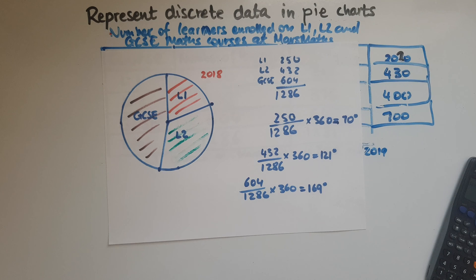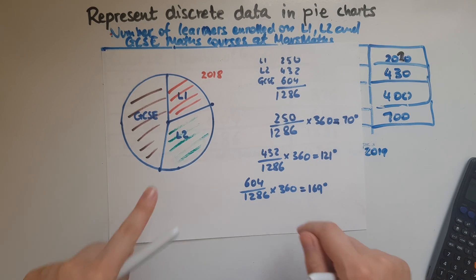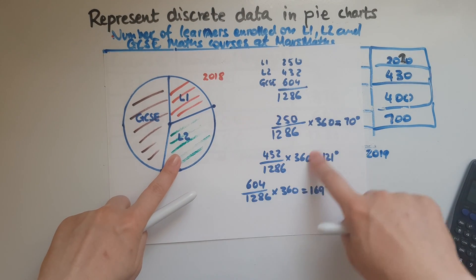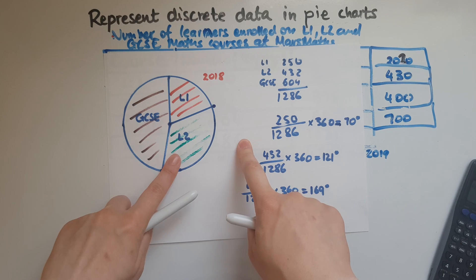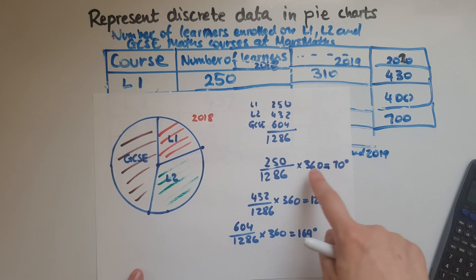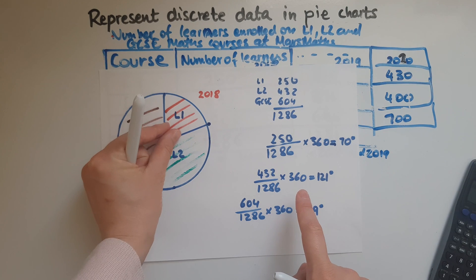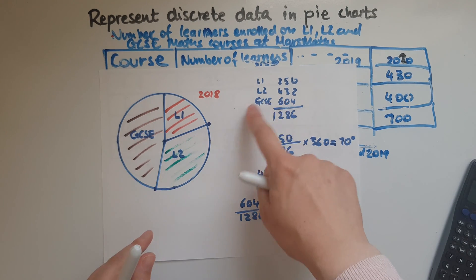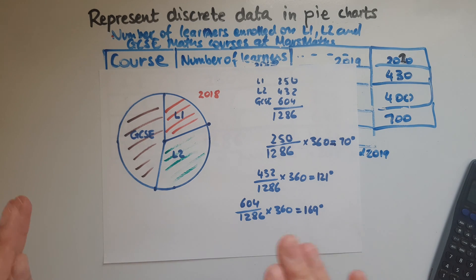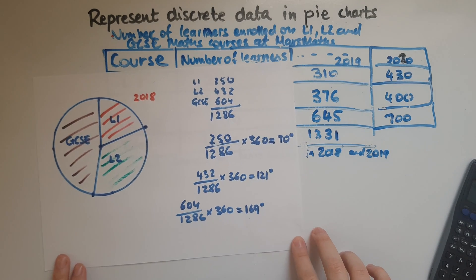Now, if we would like to compare two different years using a pie chart, what we'd do is next to this, we'd have another pie chart representing level one, level two and GCSE, just like we did here, but with the 2019 data. And that should show clearly if the sector for level one is larger in one of them, you can see that there are more learners in that particular year. If you'd like to have a go at representing the 2019 or 2018 data, all three of them, that's what we'd like to do.